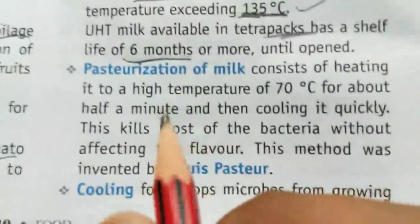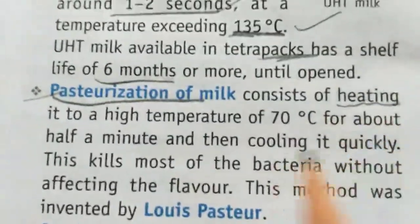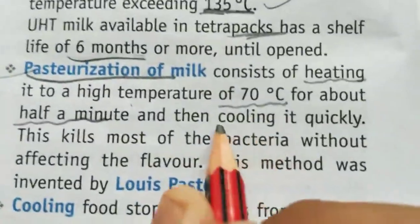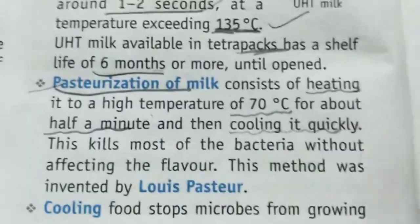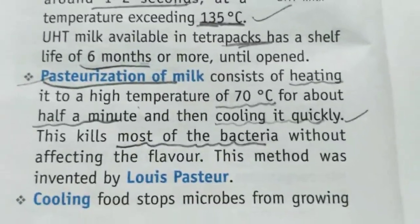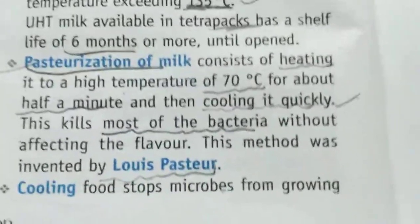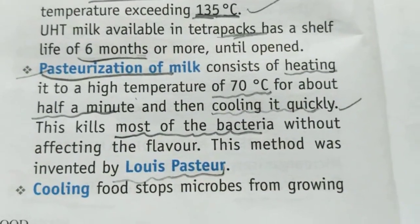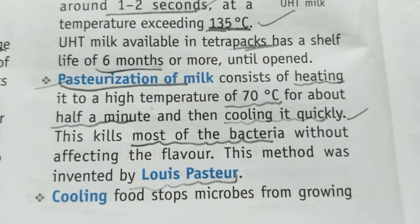The next concept is pasteurization of milk. In this method, milk is first heated at 70 degrees Celsius for about one minute, then cooled quickly. Most of the bacteria get killed. This is known as pasteurization of milk, and this method was developed by Louis Pasteur.